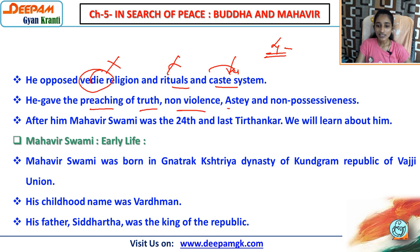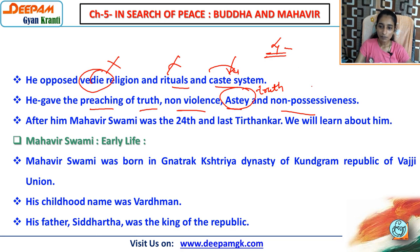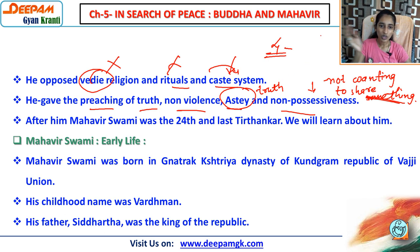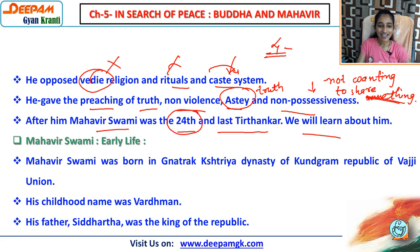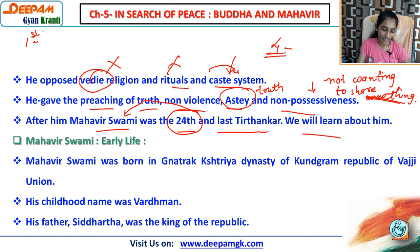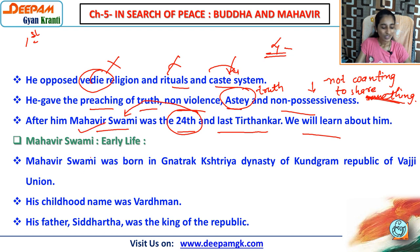Paswanath gave the preaching of truth, non-violence, Asti (non-stealing), and non-possessiveness — meaning not wanting to accumulate things unnecessarily. After him, Mahavir Swami was the 24th and last Tirthankar. So to remember: first Tirthankar was Rishabhdev or Adhinath, 23rd was Paswanath, and 24th and last was Mahavir Swami.